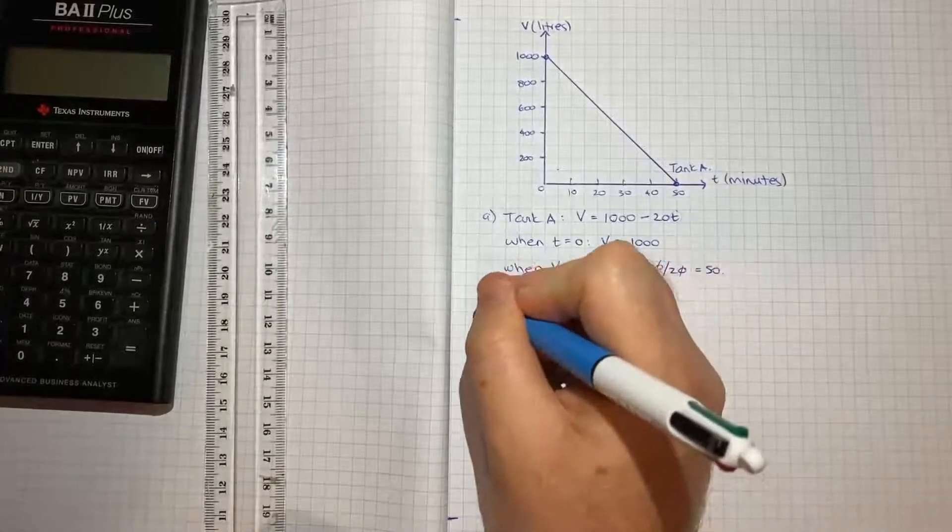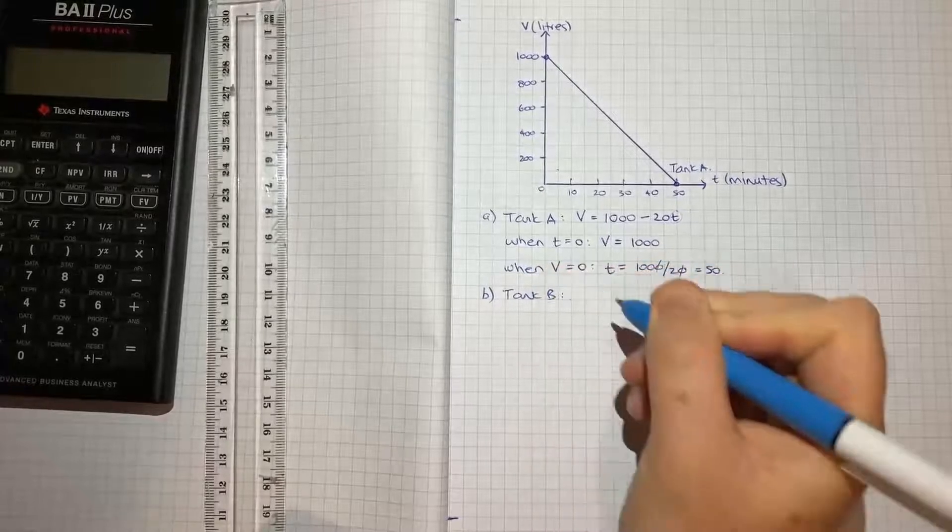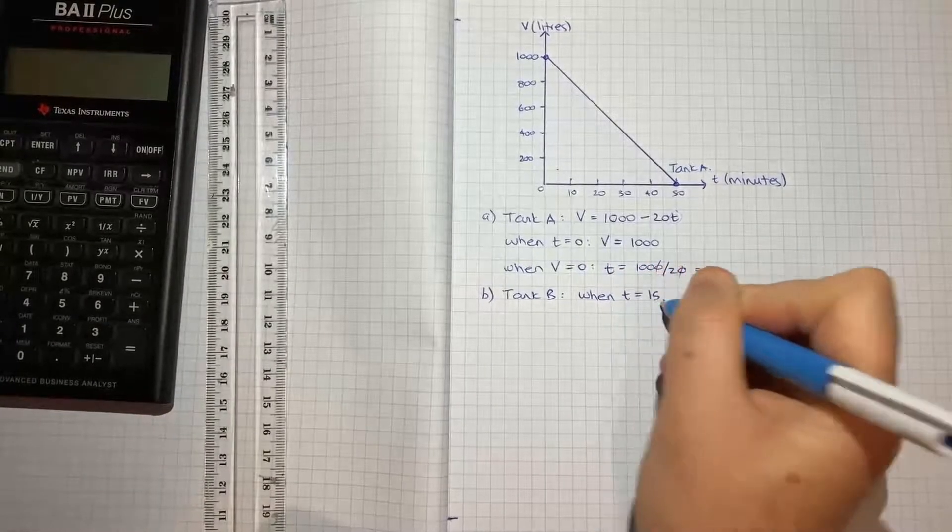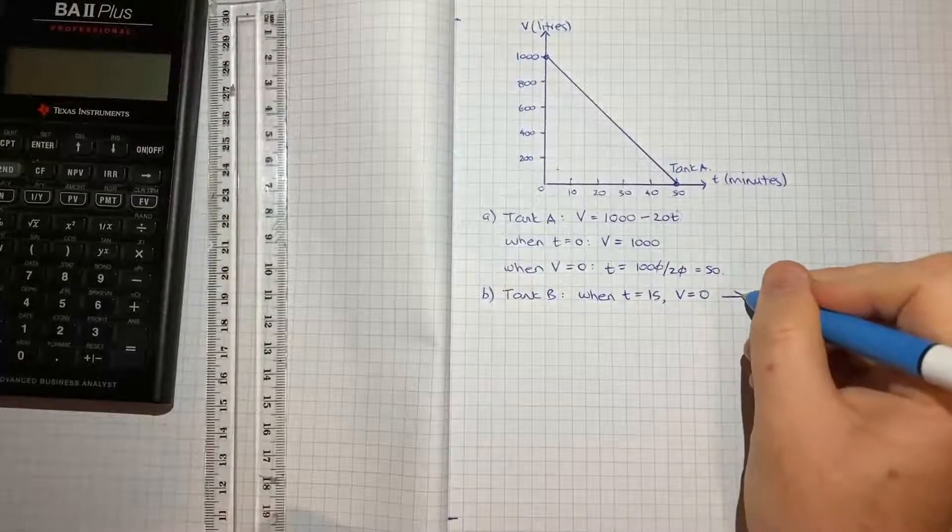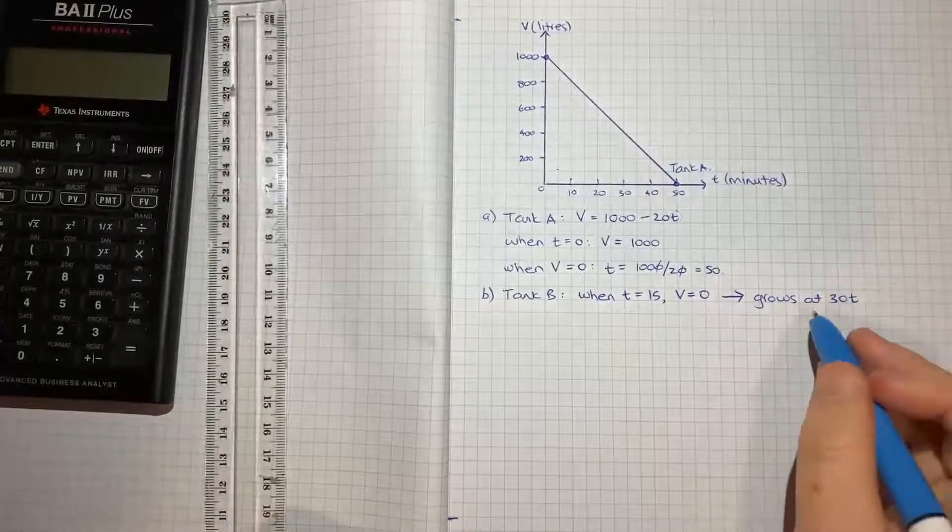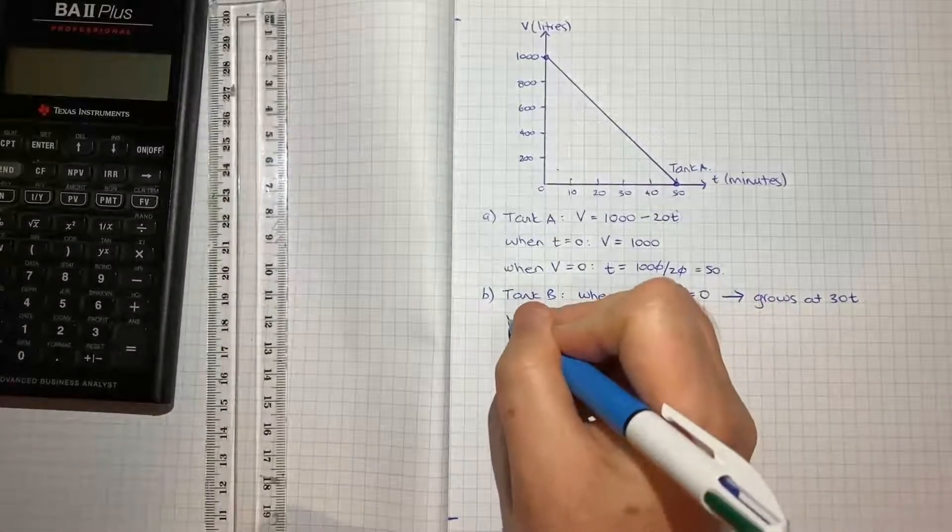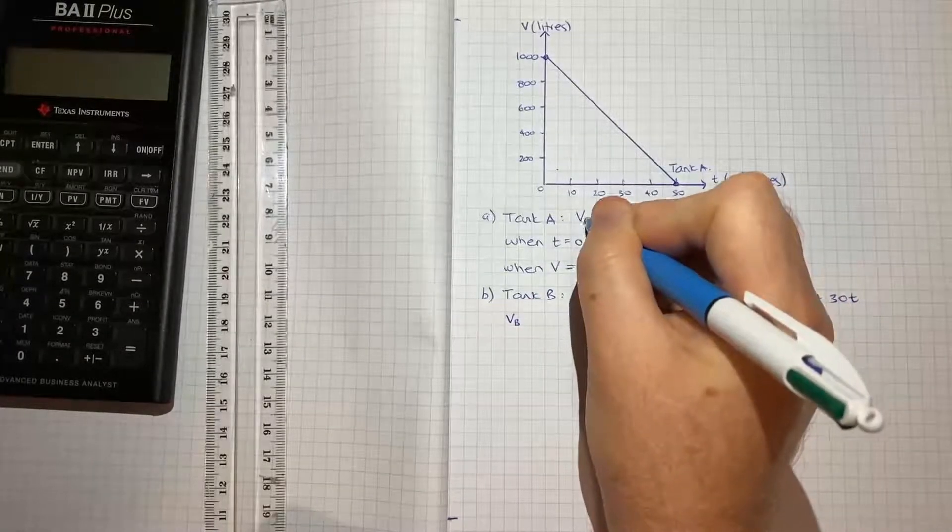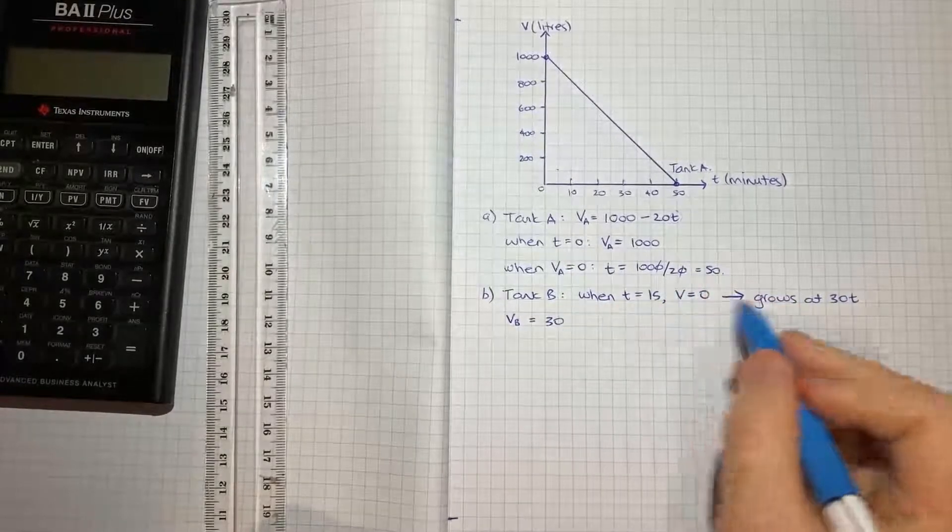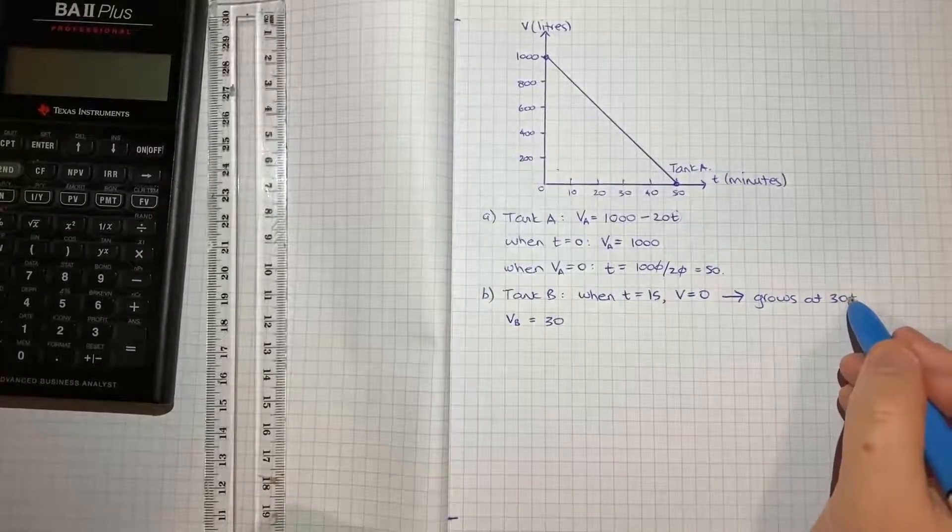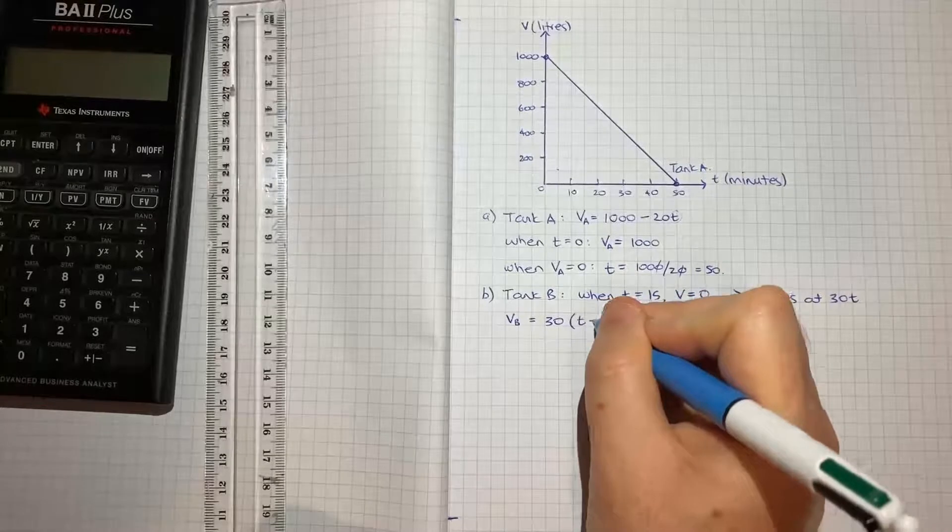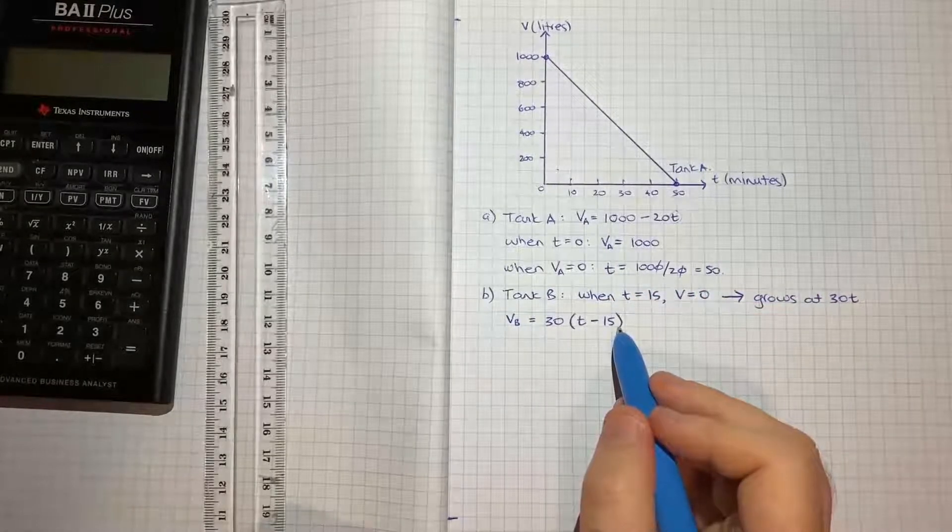For part B, we're introduced to tank B. When T = 15, V = 0, and then it grows at 30 liters per minute. So what we're dealing with is the volume—I'll call this volume B. I'll call all of these volume A to distinguish them. Volume B will equal 30 multiplied by the number of minutes that have passed after T = 15. So the function is VB = 30(T - 15).